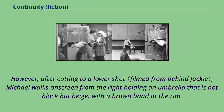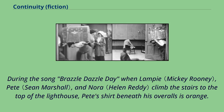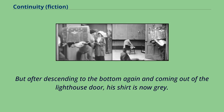Another glaring example of poor continuity occurs in the Disney film Pete's Dragon. During the song Brazzle Dazzle Day when Lampy, Pete, and Nora climb the stairs to the top of the lighthouse, Pete's shirt beneath his overalls is orange. But after descending to the bottom again and coming out of the lighthouse door, his shirt is now gray.